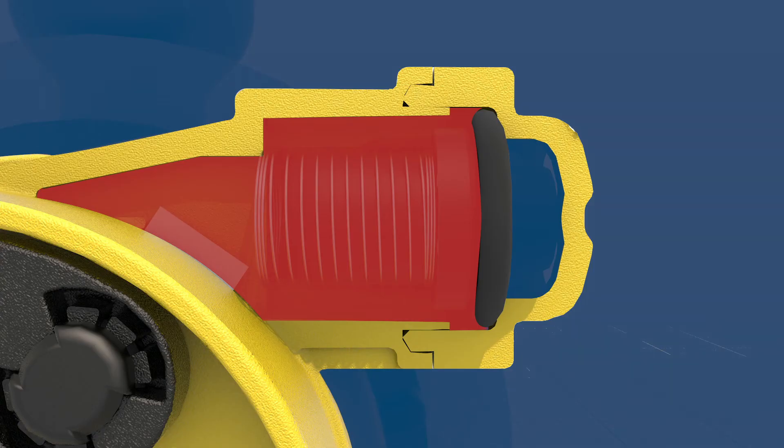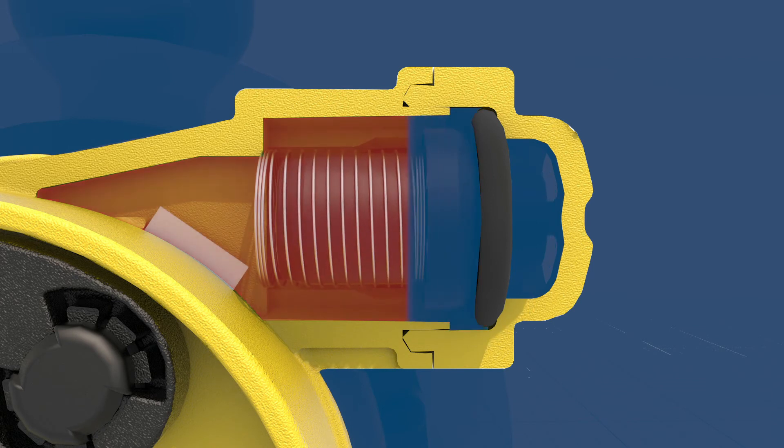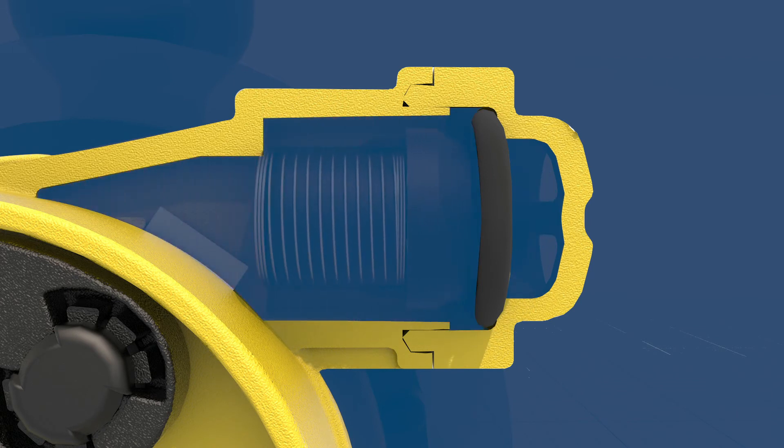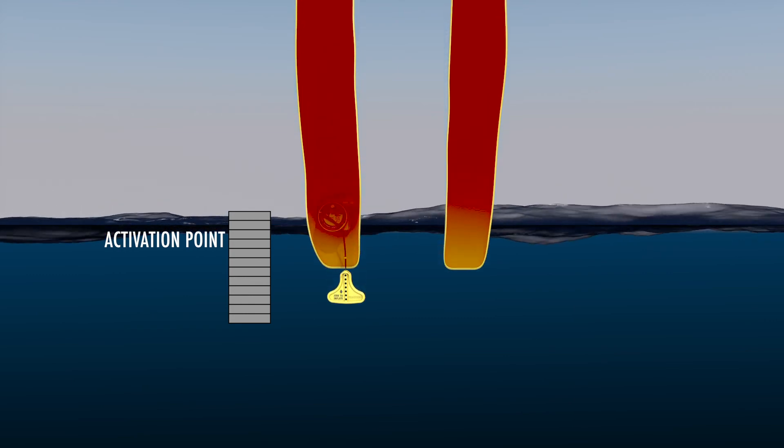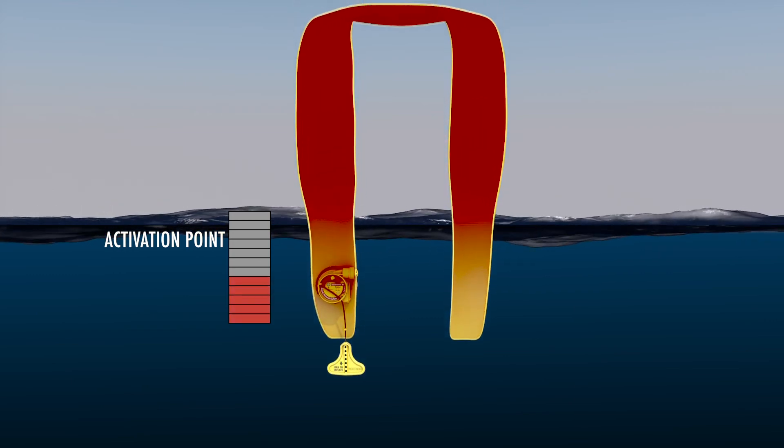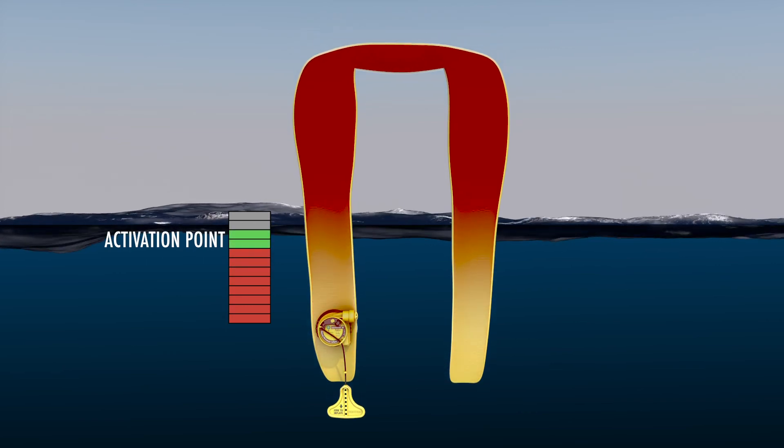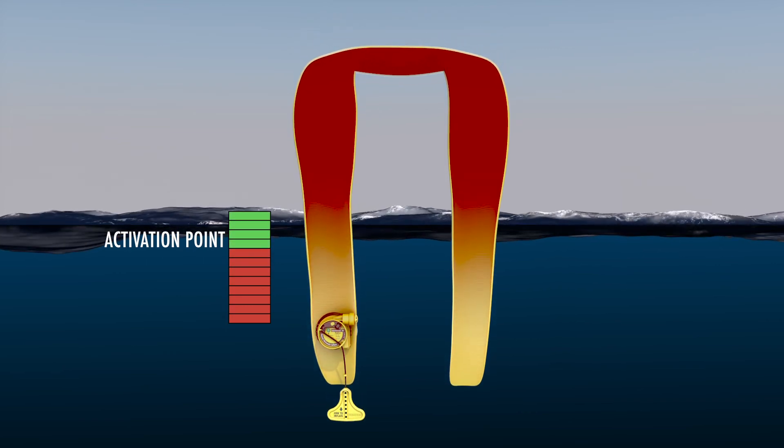Water can only enter the valve when the internal air pressure drops. What will cause this drop in air pressure? As the life jacket is submerged, water pressure squeezes the bladder, forcing the air inside up to where the pressure is lower, near to or above the surface of the water.